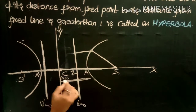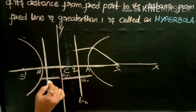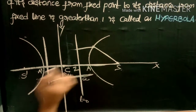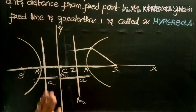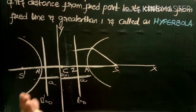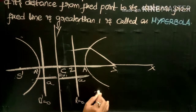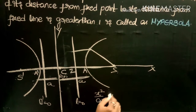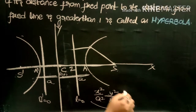The distance between C and A equals small a, and the distance between C and A dash also equals small a, since C is the midpoint. The equation of the hyperbola in standard form is x squared by a squared minus y squared by b squared equals one.